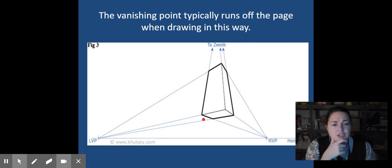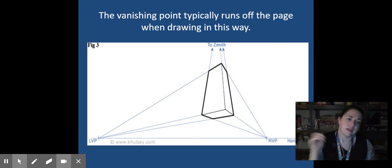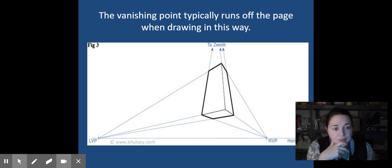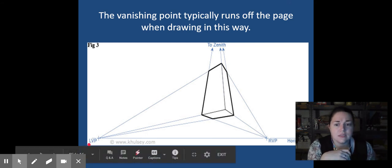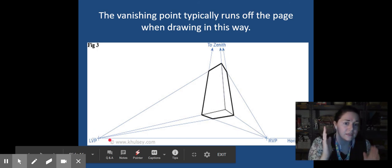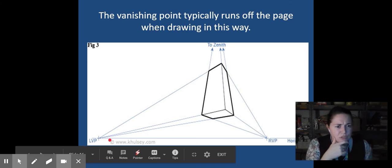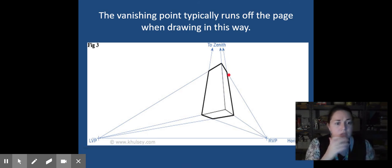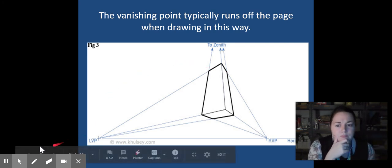As I mentioned earlier, the vanishing point typically runs off the edge of the page, and there's a reason for this. You'll notice here, the further the vanishing point is from the cube, the less pitched or less angled the cubes look. Notice here on the right, these angles are pretty dramatic. We want a more realistic looking tree house. So again, the further the vanishing points are, the flatter and more realistic it will look. That's why we're doing our vanishing points off the edge of the page.